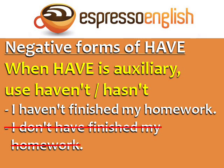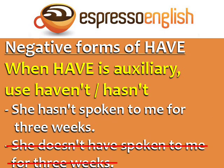When have is the auxiliary verb, like in the present perfect, then use haven't and hasn't. For example: I haven't finished my homework. She hasn't spoken to me for three weeks.